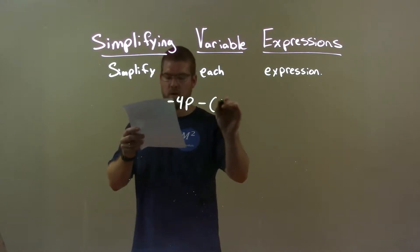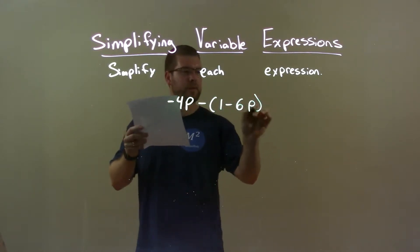Today we're learning about simplifying variable expressions. We're going to simplify each expression. So, if I was given this expression, negative 4p minus 1 minus 6p, okay?